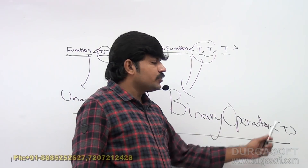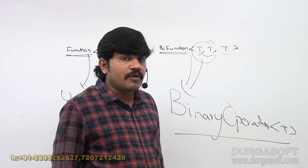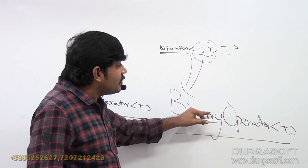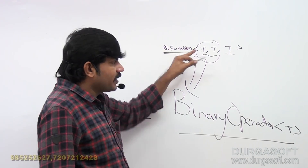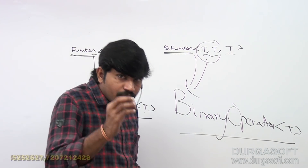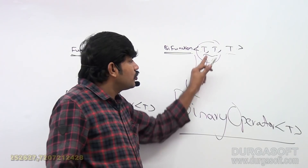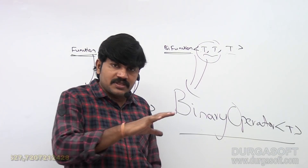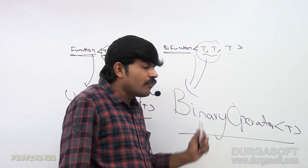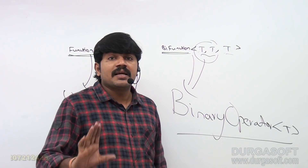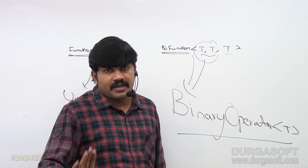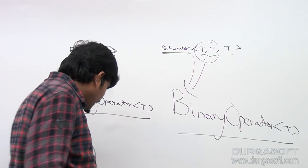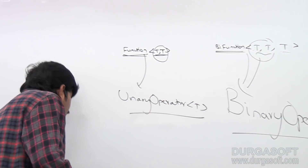When should we go for binary operator? It is the child of bifunction. If two inputs and the return type are always the same, then we should go for binary operator. I will explain this with a small example.